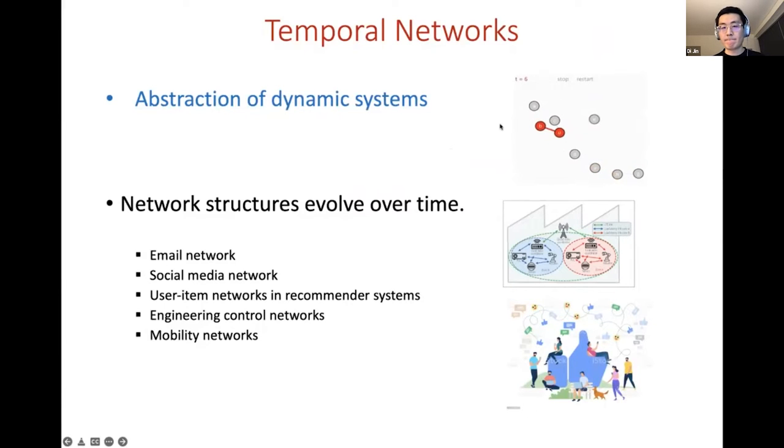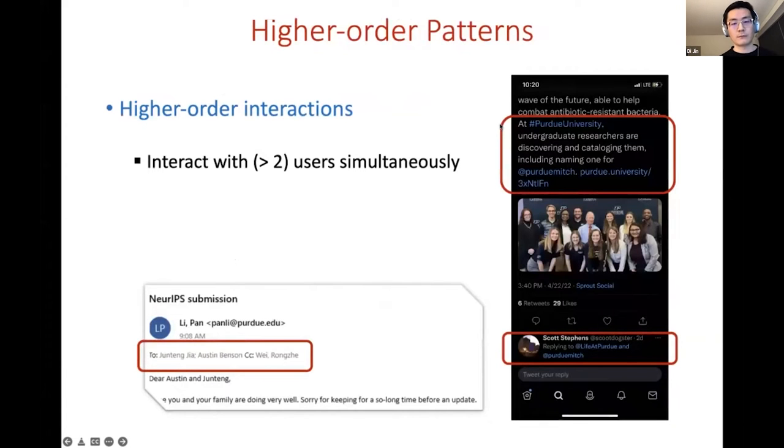Think about an email network where senders sending emails to the recipients correspond to the interaction in the temporal networks. In a social media network, users may post messages while other users can respond to these messages, which correspond to interactions in a temporal network. Temporal networks could be rather complicated as they entangle temporal and structural information. In this work, we are trying to handle an even more complicated case.